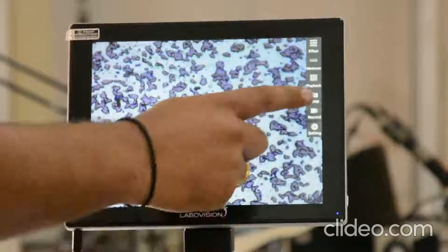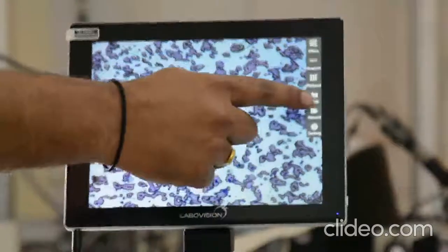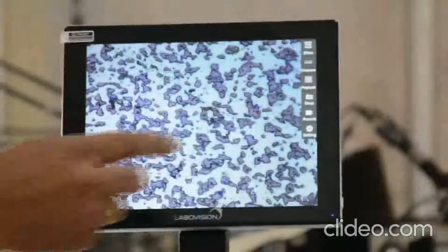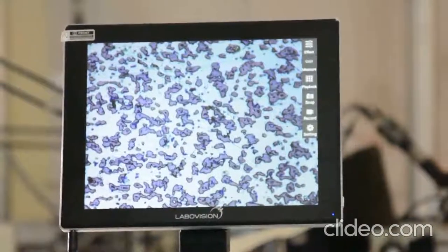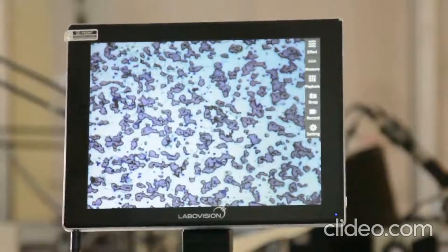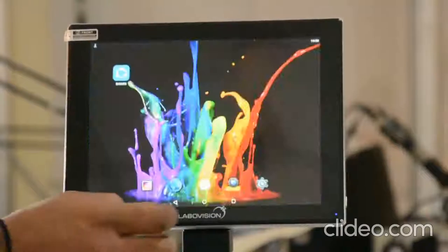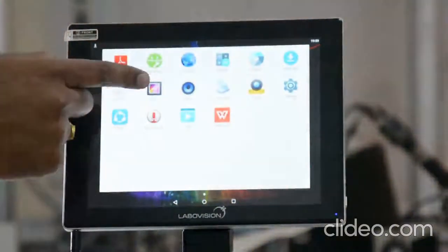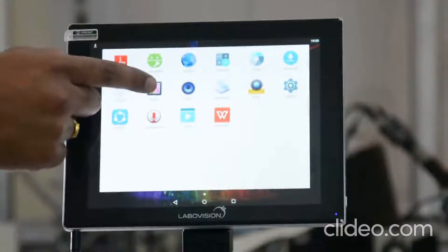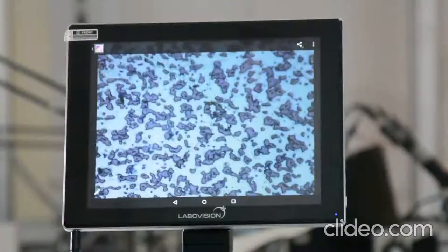Now we will show you the capturing of the image. Now image has been captured. If you want to view the image, slide up. Go to the image folder. Now you see this is the photo folder, just like an Android. Click on the photo folder. Now this is your current image which has been captured.